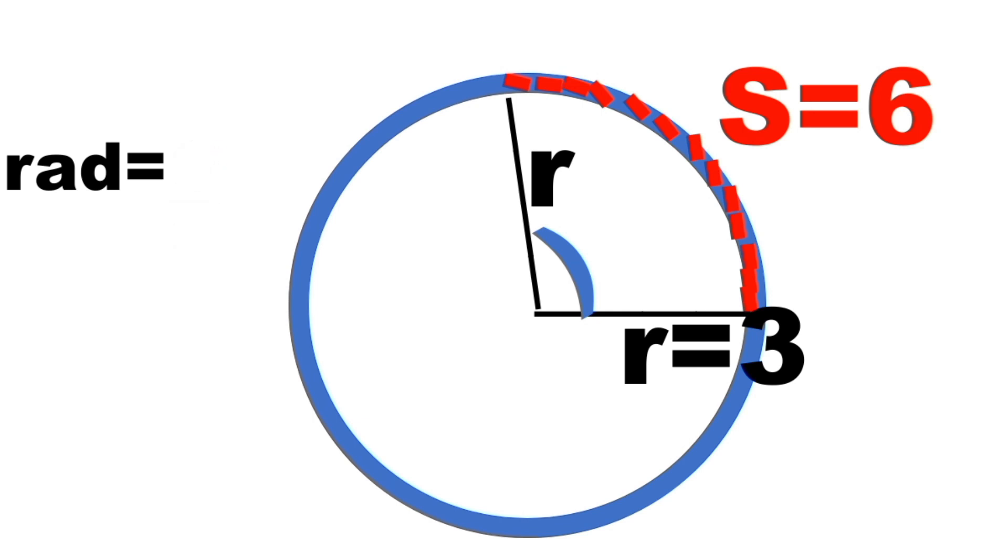and this is equal to 2. So the measurement of the angle in radians is equal to 2 radians.